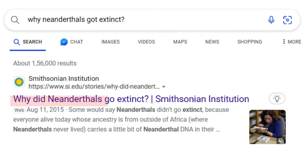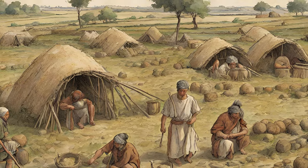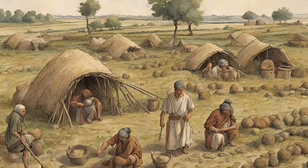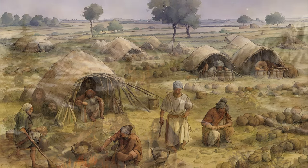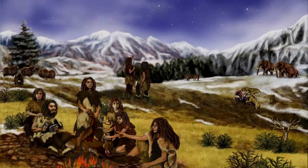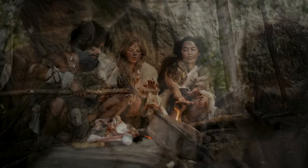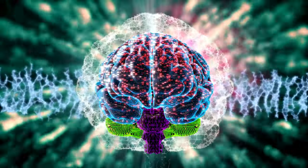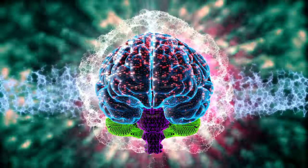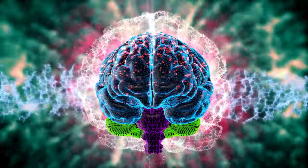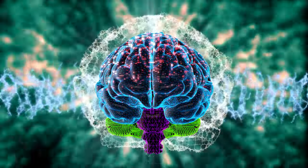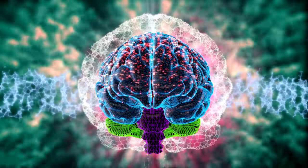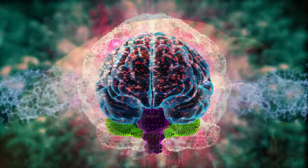Why did our ancient relatives, the Neanderthals, disappear, and why did our ancestors, early Homo sapiens, take over? People have thrown around ideas like differences in dealing with climate change, social systems, language skills, and even cannibalism. But some scientists think it might have to do with brain differences between Neanderthals and early Homo sapiens, which could have led to changes in behavior, ultimately giving our ancestors an edge.